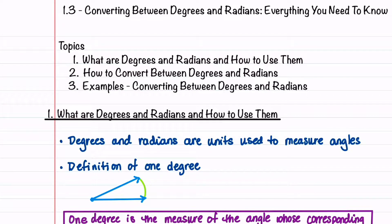Welcome to Understand the Math. In the video description you'll find a link to guided notes that can be downloaded and filled in as you follow along with the video. In this video I'm going to quickly review the definition of a degree and a radian, explain how to convert from degrees to radians and from radians to degrees, and also complete some example problems on converting between the two.